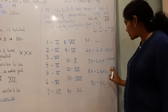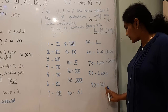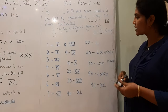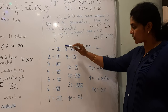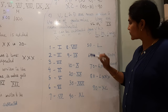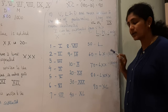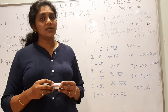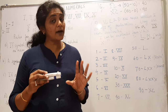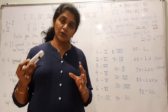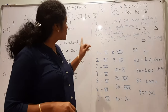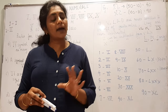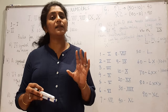You cannot write XXXX for 90, so 90 is written as XC — 100 minus 10. In this way, I have written the representation of numbers 1 through 90. If you are given any number to represent, you have to convert it into Roman numeral form. If these rules are clear, then you can easily write any number in Roman numeral form.